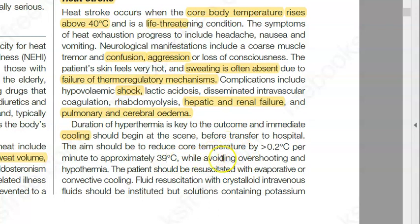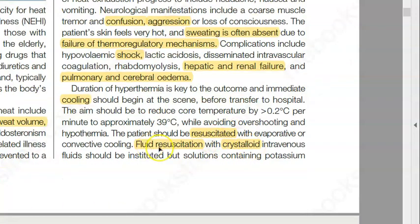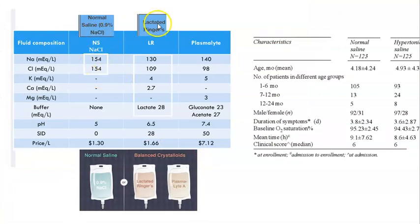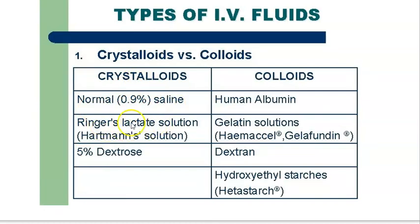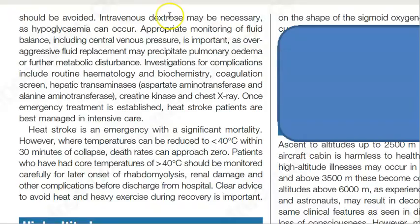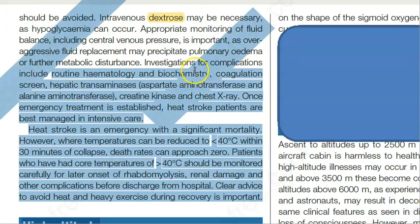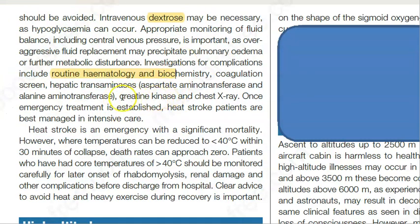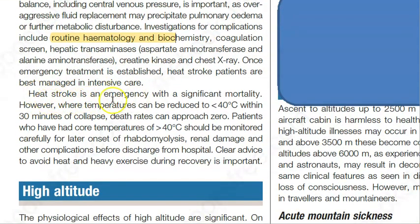Treatment involves cooling the person and reducing core temperature — strip, spray, fan. Resuscitate with airway, breathing, circulation. Give crystalloid fluids, but do not give Ringer's lactate because it contains potassium. Give normal saline. Dextrose can also be given as a crystalloid since the patient may be hypoglycemic. Routine blood tests and biochemistry should be done to check liver function, coagulation, etc.